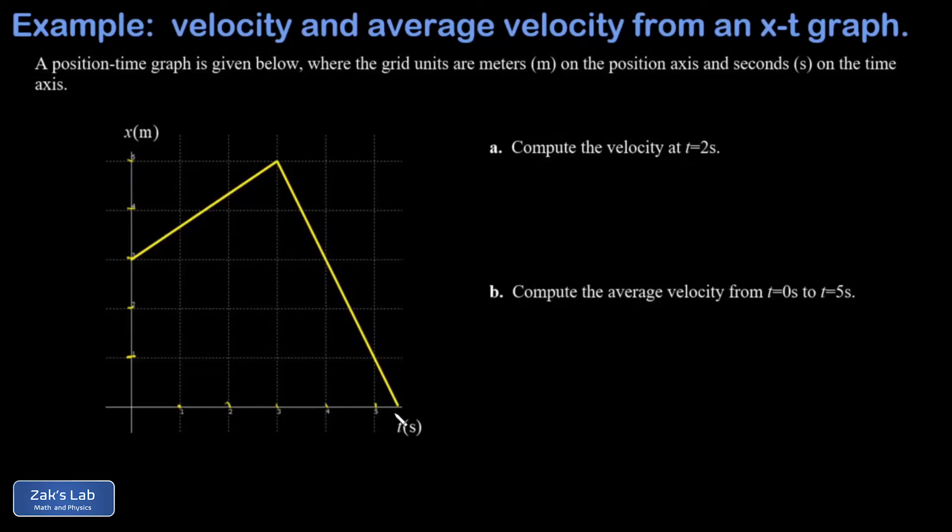In part A, I'm asked for the velocity at t equals two seconds, so it's this moment in time right here. Well, the instantaneous velocity at that moment in time is just the slope of the position graph at that moment, but this is a line segment, and that has a constant slope, so I can choose whatever method I want to measure the slope of this line segment, and I've got my answer.